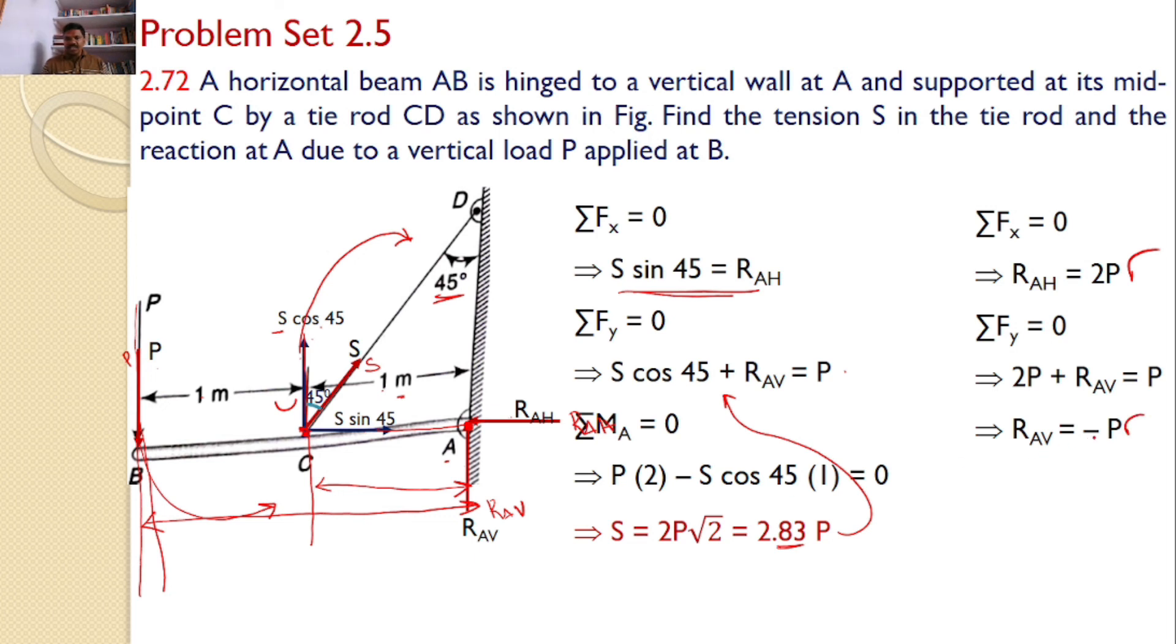What is the meaning of this minus P? We initially assumed that RAV is acting in the upward direction, but the actual direction is vertical only, but in the opposite direction. The magnitude is same, only direction will change. Now, RAH is 2P, RAV is minus P. Hence, the reaction at A, RA, is given by root of 2P squared plus minus P squared. And RA value is 2.23P.